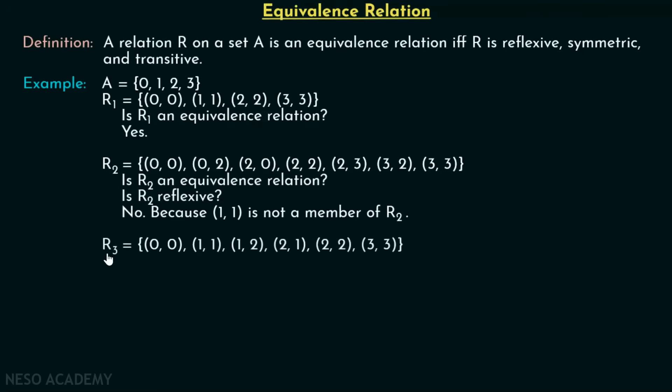Now let's see R3, which consists of the ordered pairs: (0,0), (1,1), (1,2), (2,1), (2,2), (3,3). These are all the ordered pairs of relation R3.